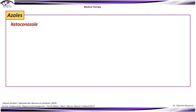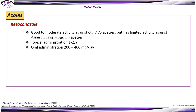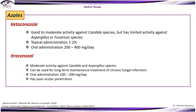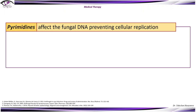Ketoconazole has good to moderate activity against Candida species but limited activity against Aspergillus or Fusarium species. Topical dosage is 1–2% and oral administration is 200–400 mg per day. Itraconazole has moderate activity against Candida and Aspergillus species and can be used for long-term maintenance treatment of chronic fungal infections. Oral administration is 100–200 mg per day; it has poor ocular penetration.